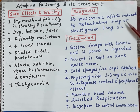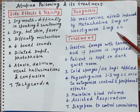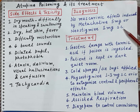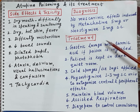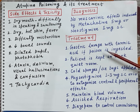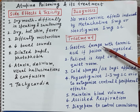Atropine poisoning can be diagnosed when no muscarinic effects are induced by the use of methacholine 5 mg or neostigmine 1 mg administered by the subcutaneous route. Regarding treatment: gastric lavage is performed if atropine has been consumed and is believed to still be present in the stomach.